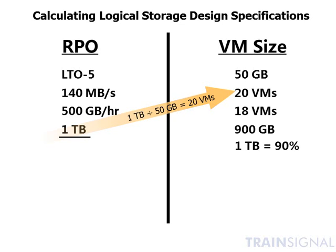If you're concerned about 90% utilization because you haven't accounted for VM memory size and associated swap space, you might drop down to 16 VMs, which gives 800 gigabytes — an 80% utilization rate. 80% is a more common target, meaning you'll maximize data stores while ensuring they're no more than 80% utilized.